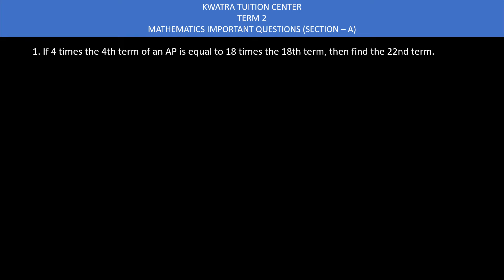Hello everyone, we will be starting with some important questions for Term 2. In this video I will be covering some questions for Section A only. So first question, if 4 times the 4th term of an AP is equal to 18 times the 18th term, then find the 22nd term.